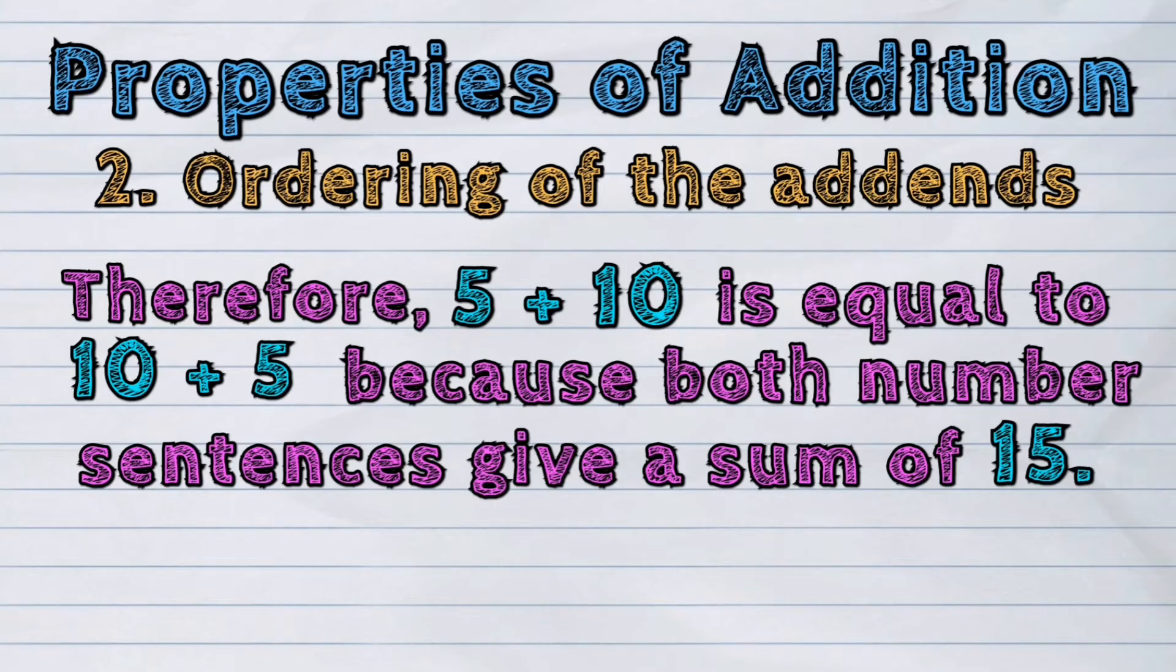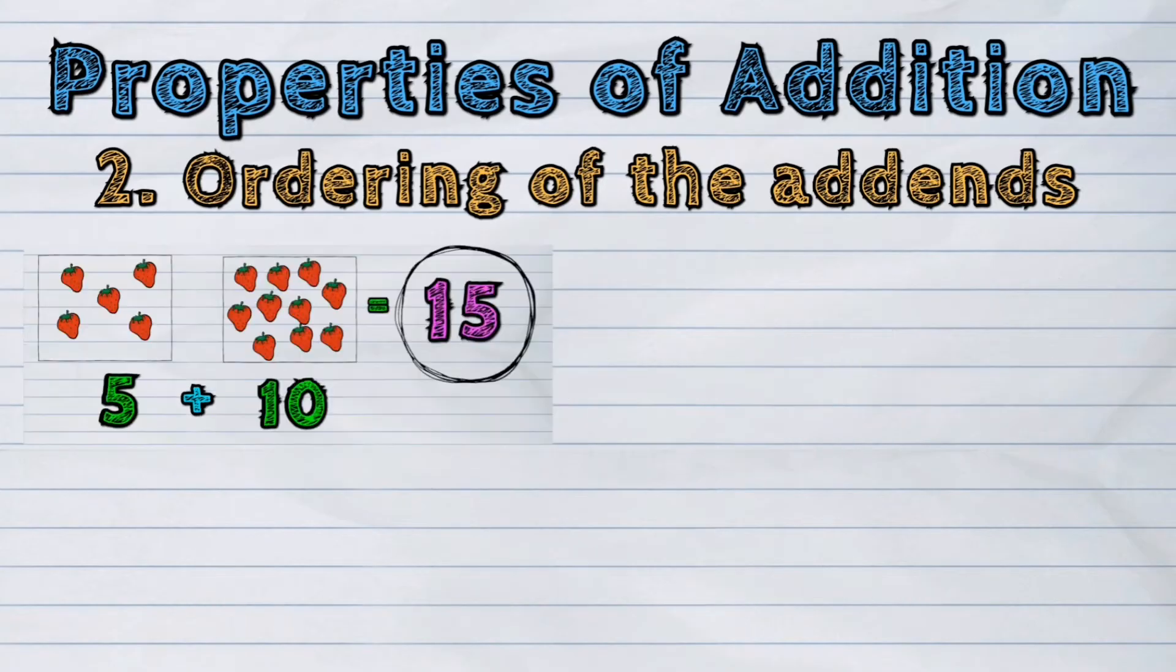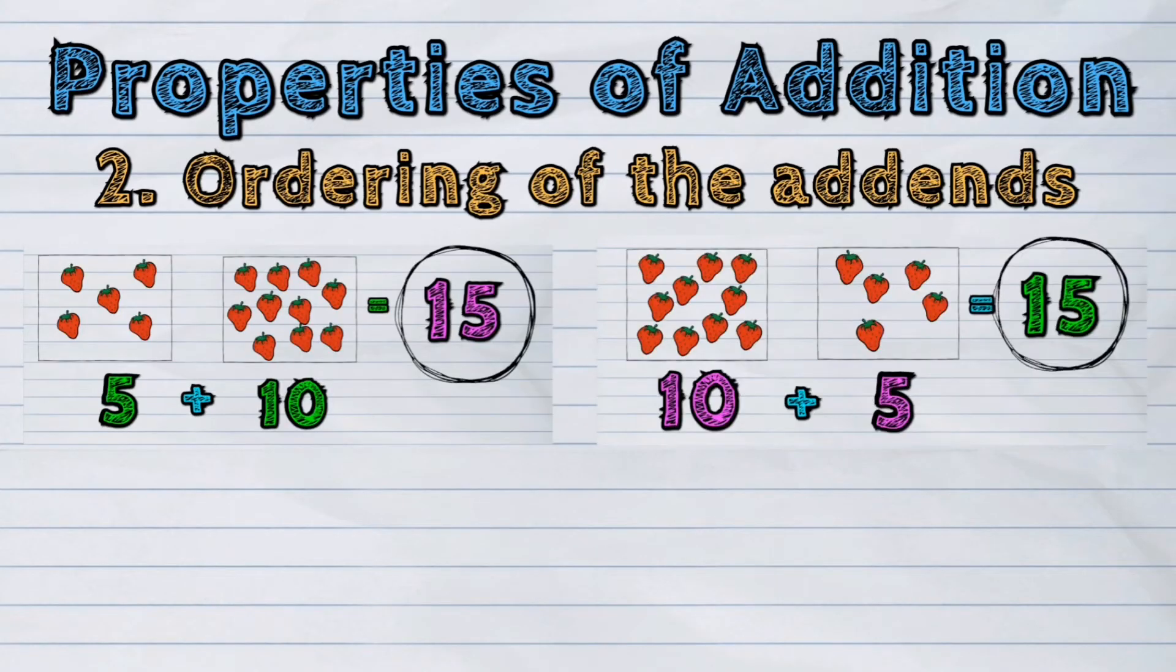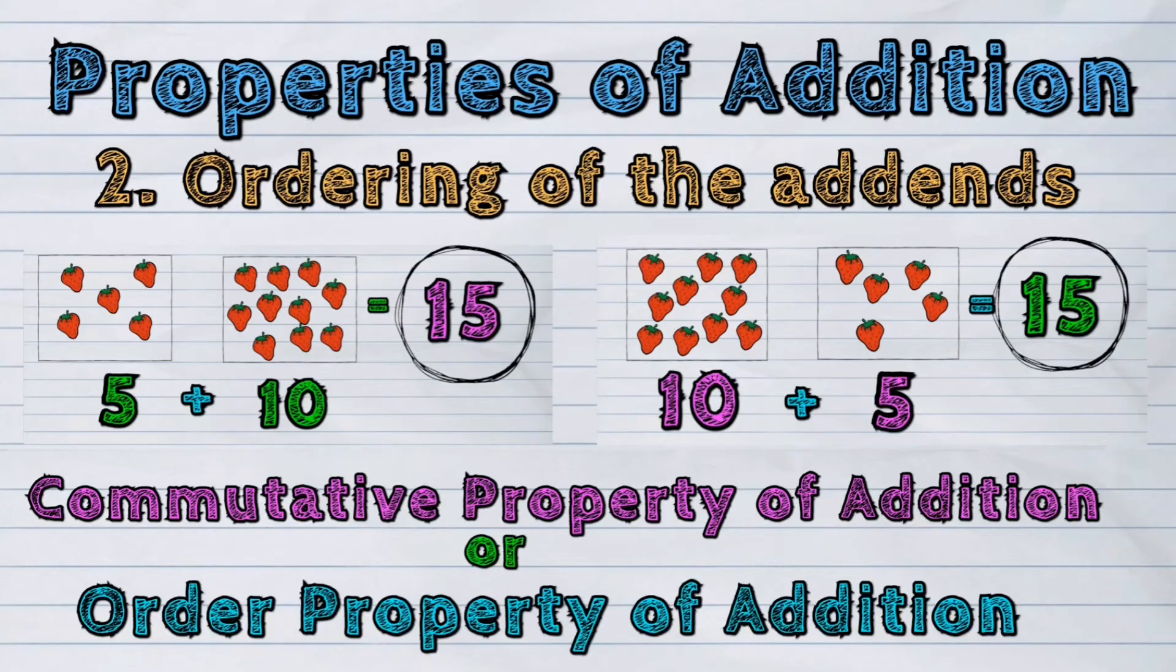The format is a plus b is equal to b plus a. It means changing the order of the addends does not change the sum. This is called commutative property of addition or the order property of addition.